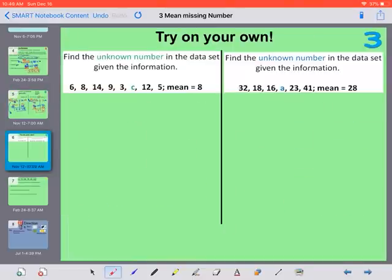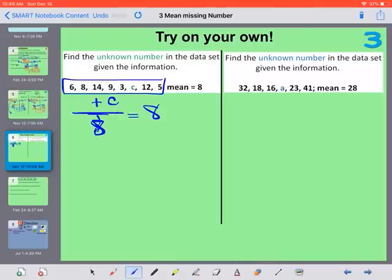I would like you to try these two on your own, and then click play to see if you got them right. So we have 1, 2, 3, 4, 5, 6, 7 numbers. We're going to end up dividing by 7. And our mean should equal 8. So if we add these up, 6 plus 8 plus 14 plus 9 plus 3 plus 12, oh, and 5. We have 8 numbers, not 7. Got to include all of these.